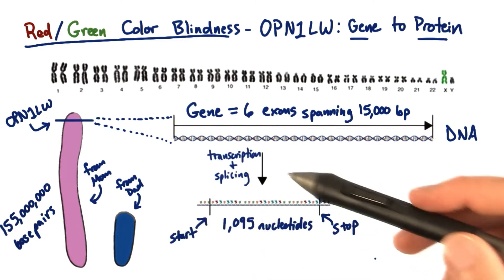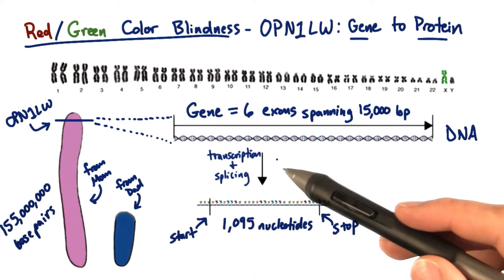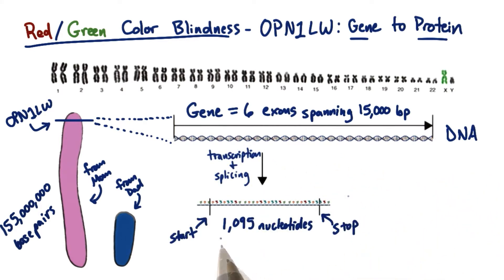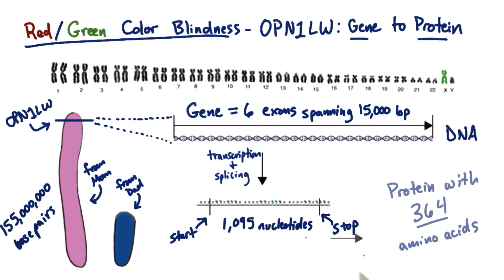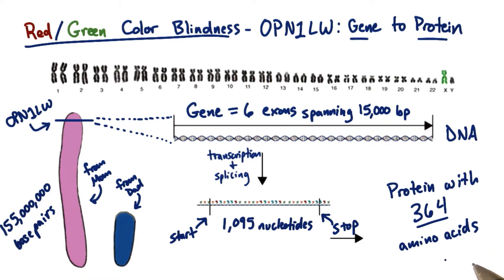After transcription and splicing of the gene, we're left with a coding region that's 1,095 nucleotides long. And so after translation, we end up with a protein that's 364 amino acids long.